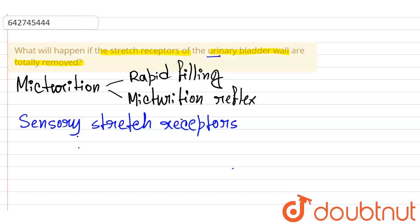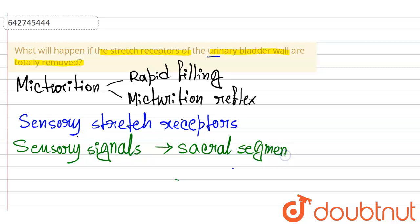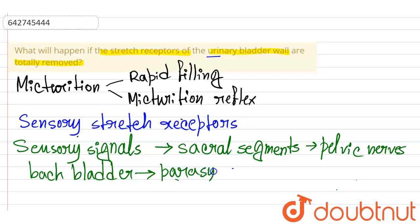The sensory signals from these stretch receptors go to the sacral segments through the pelvic nerves, and then back to the bladder through parasympathetic nerves.